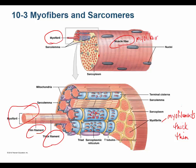Inside the myofiber there is also a lot of smooth ER — in muscle, this is called the sarcoplasmic reticulum (SR). A triad consists of the dilated end of one sarcoplasmic reticulum, a T-tubule, and the dilated end of another sarcoplasmic reticulum. These dilated terminals are called terminal cisternae, and the triad is very important for signaling contraction. Otherwise, the SR mainly stores calcium.